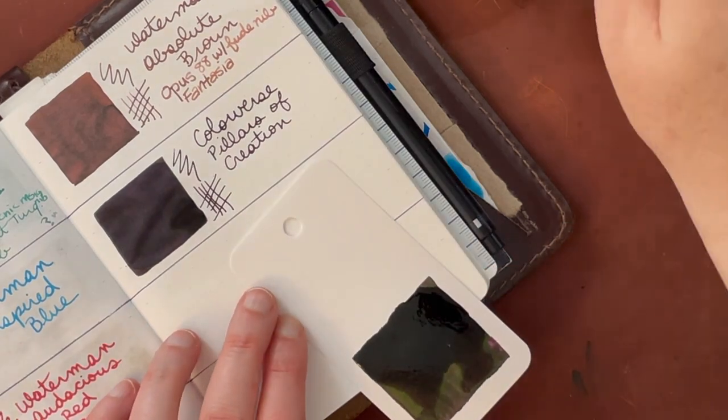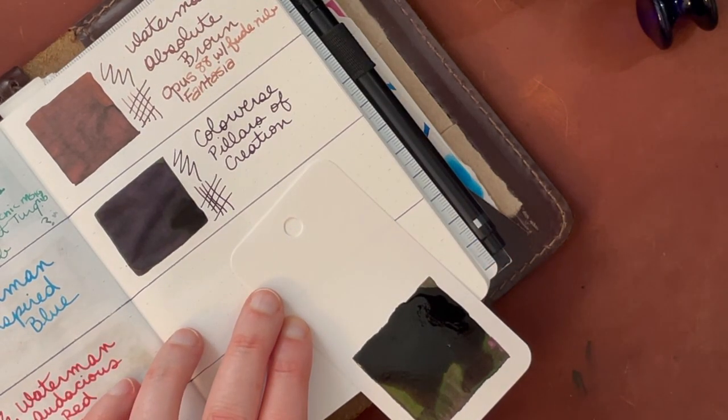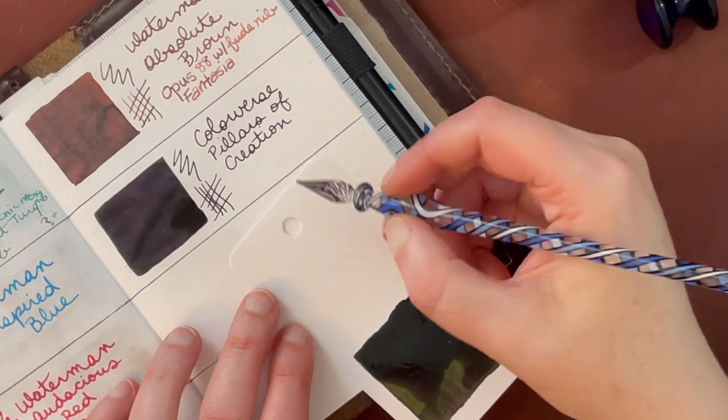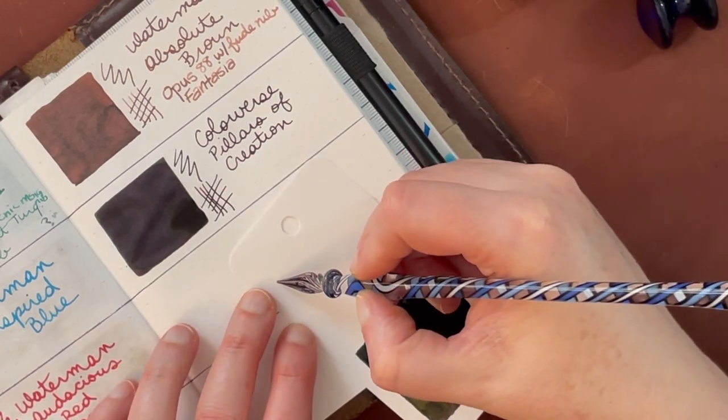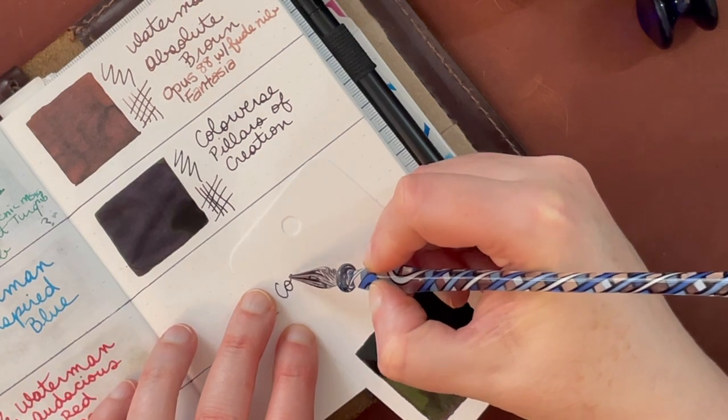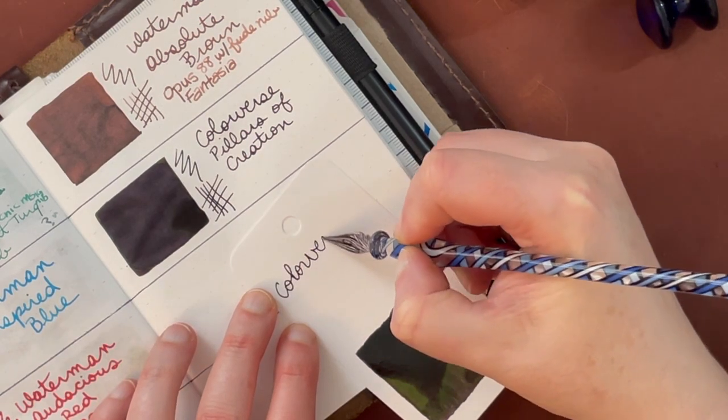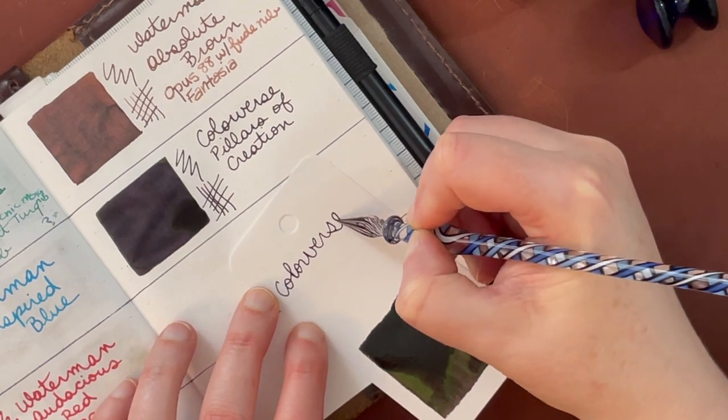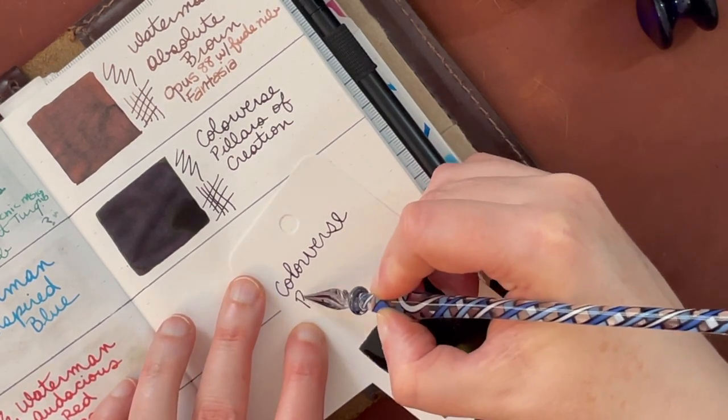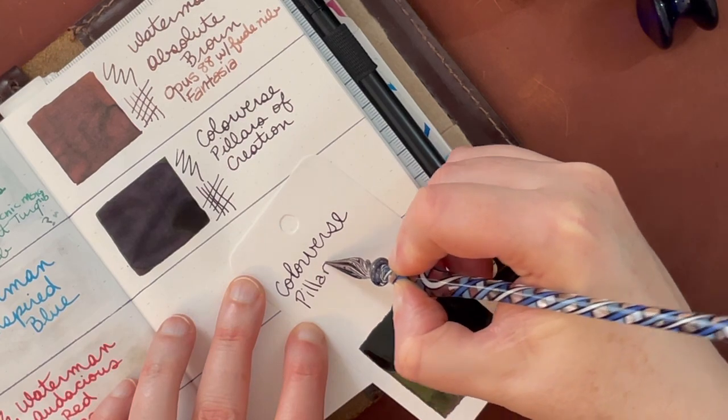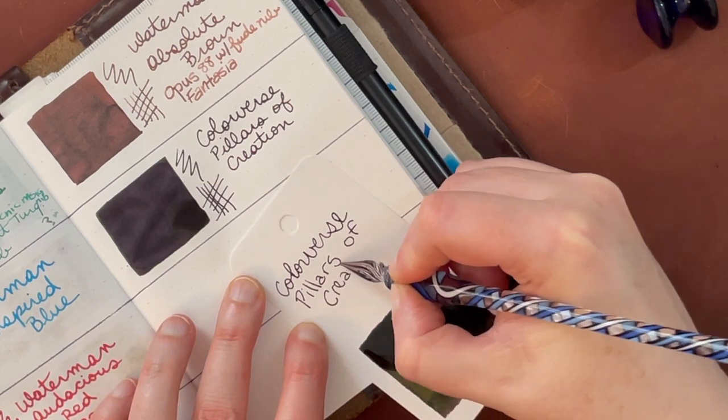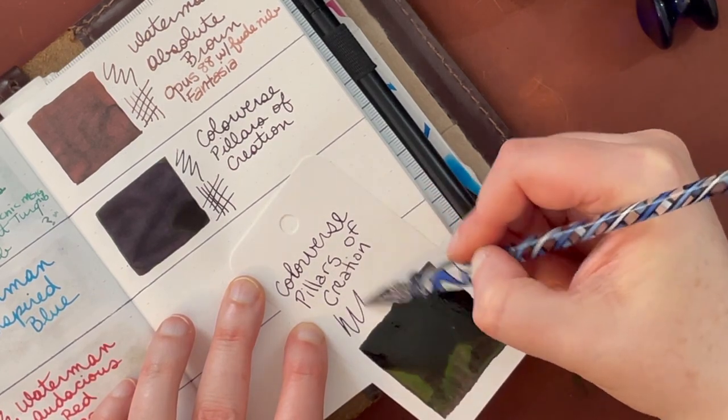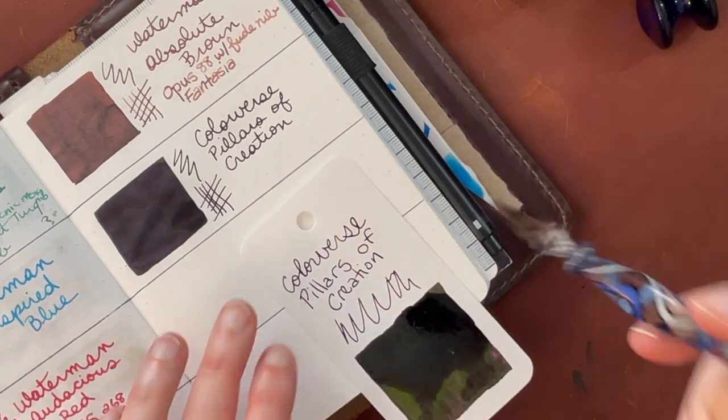So I'm going to go ahead and label this one as well. I'm wondering if this would work better or worse in a very thin nib or a fine nib. Let's see. So this is Colorverse. Snagged it there. Pillars of creation. Okay.